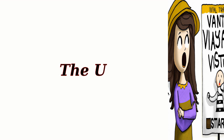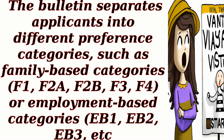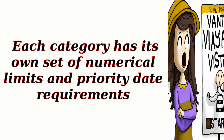The U.S. Department of State publishes a monthly visa bulletin that indicates the current priority dates for each visa category. The bulletin separates applicants into different preference categories, such as family-based categories F1, F2A, F2B, F3, F4, or employment-based categories EB1, EB2, EB3, etc. Each category has its own set of numerical limits and priority date requirements.